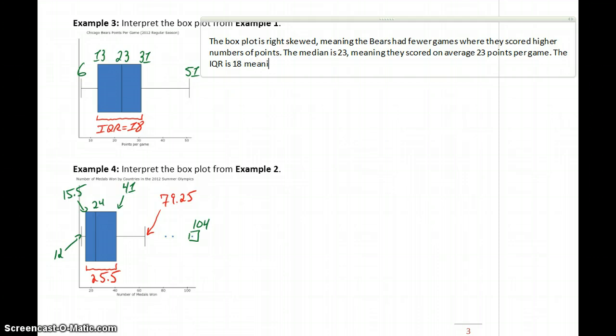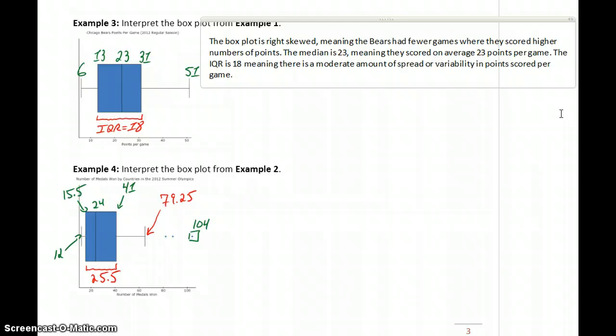The IQR is 18, meaning there is a moderate amount of spread or variability in the number of points they scored per game. That would be a little bit up to interpretation. Is 18 a large amount of spread, a little amount of spread? 18 points is more than two touchdowns, so let's say a moderate, but there's some room for interpretation there.